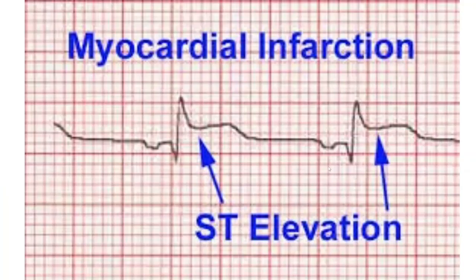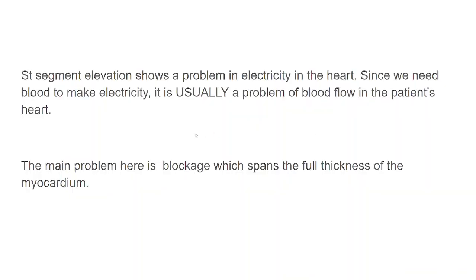Let's talk about what an ST-segment elevated MI looks like really quickly. You can see the ST-segment is elevated here — it doesn't go back down to baseline and then become a T-wave. It's as if you build a bridge between the QRS complex and the T-wave. The ST-segment elevation shows a problem with electricity; we're not able to make it, we're not able to exchange it. That electricity comes from the electrolytes, which are in blood plasma. If we're not making blood plasma get to the places it needs to go, it's obstructed.